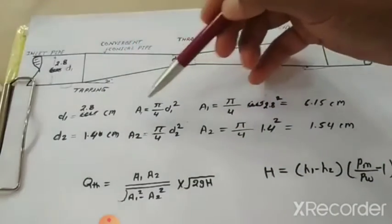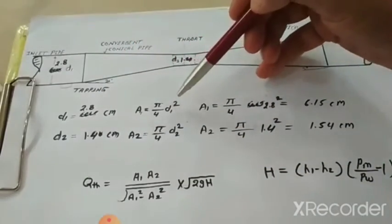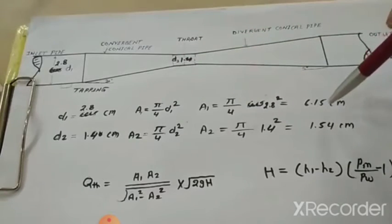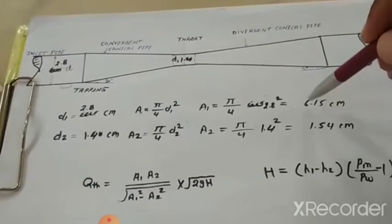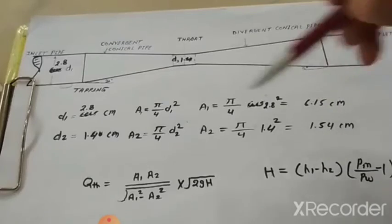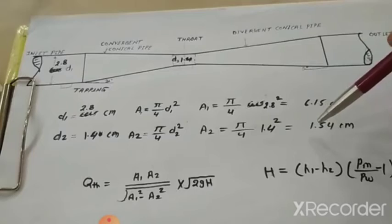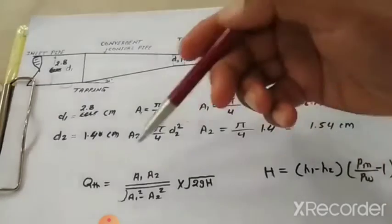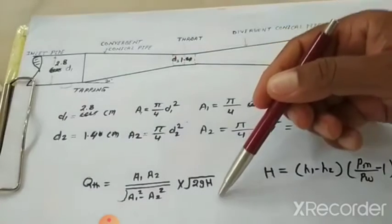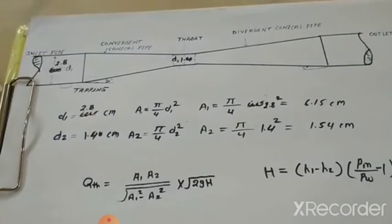So here the value of d1 is given as 2.8 centimeter, a1 will be calculated as pi by 4 d1 square and a1 value is equal to pi by 4, that is 2.8 whole square which is given as 6.15 and a2 value is 1.54 centimeter. So put the value in qth, you will get the value.